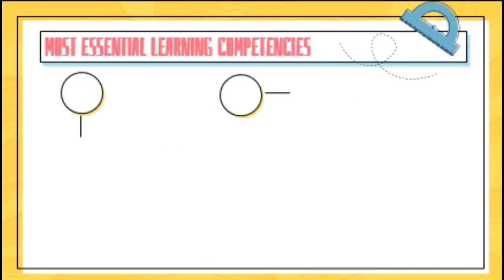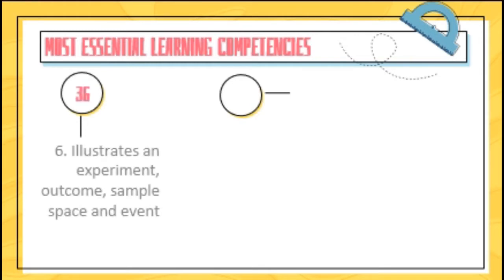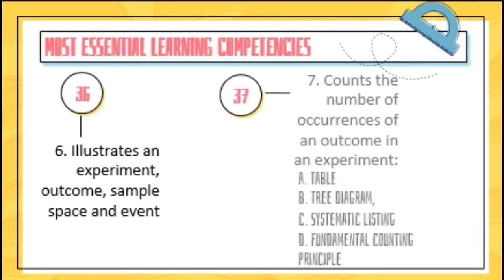Most Essential Learning Competencies: Number 36 illustrates an experiment, outcome, sample space, and event. Number 37 counts the number of occurrences of an outcome in an experiment using a table, tree diagram, systematic listing, and fundamental counting principle.